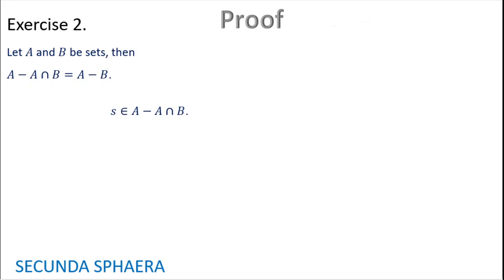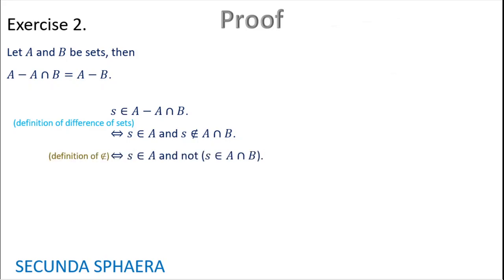Now starting with the proof. In this case the conclusion is an equality, so it is going to be proven by equivalences. Starting: s is in A without the intersection of A and B. This is if and only if s is in A and s is not in A intersection B — this is the definition of difference of sets.